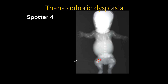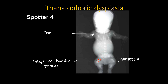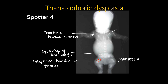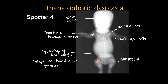This is a case of skeletal dysplasia — thanatophoric dysplasia — where we can see telephone handle long bones. The femurs show a telephone handle appearance with shortening of the proximal limbs, that is rhizomelia, and the humerus also shows telephone handle appearance. There will be associated squaring of iliac plates, narrow chest with horizontal ribs, macrocephaly, and platyspondyly as a finding in the spine.